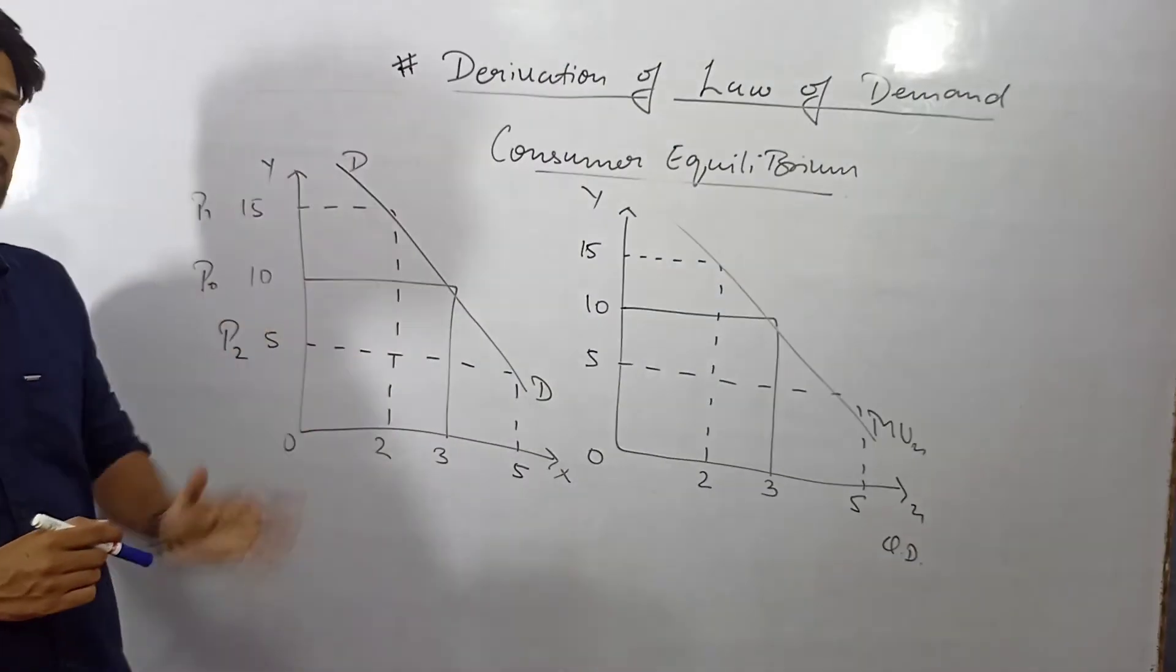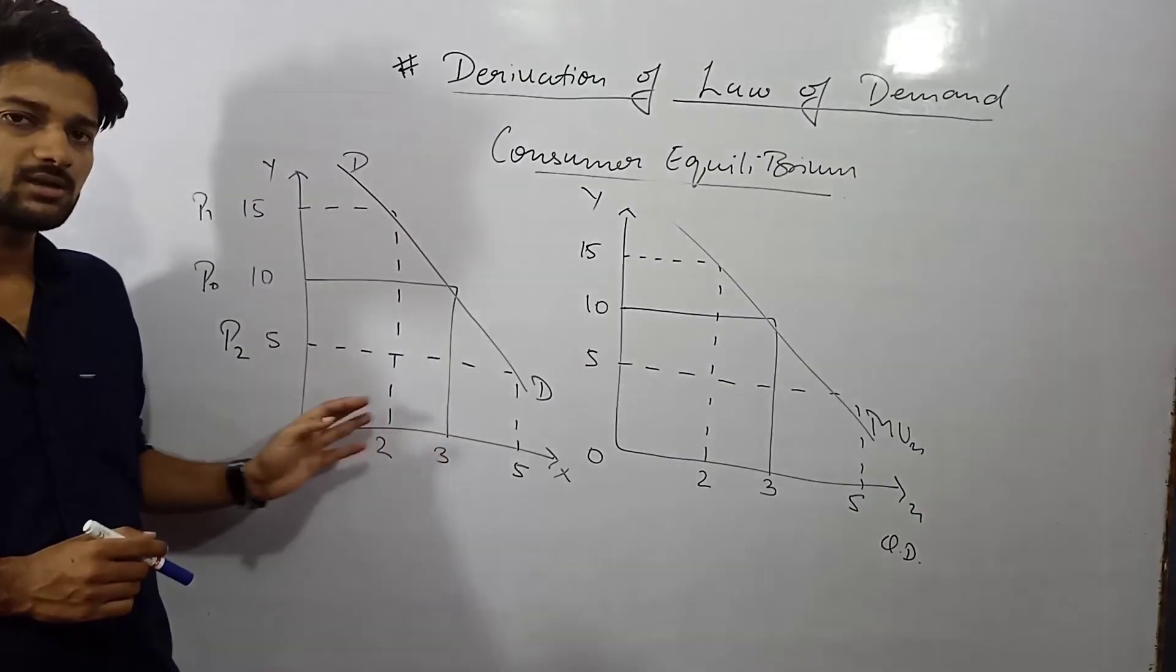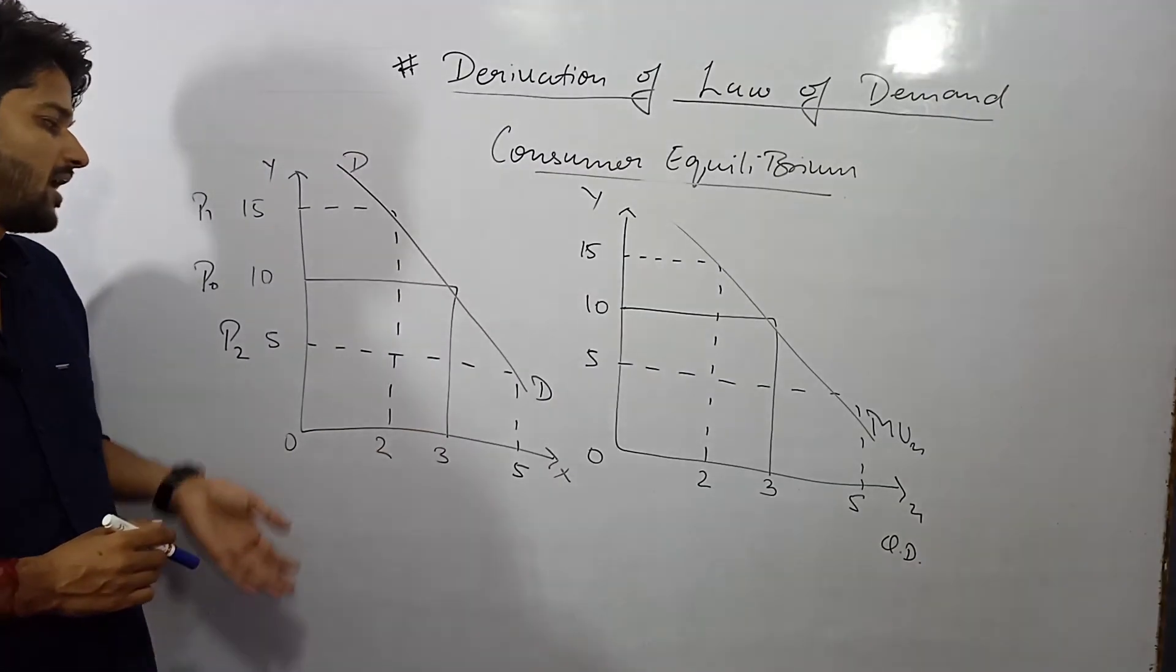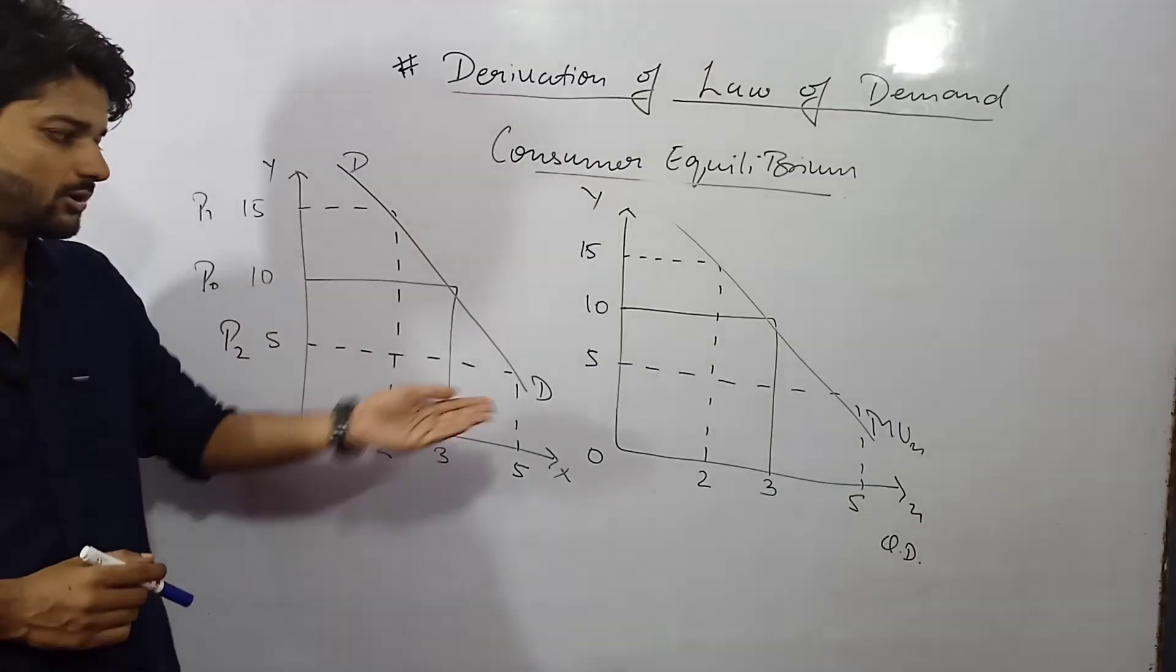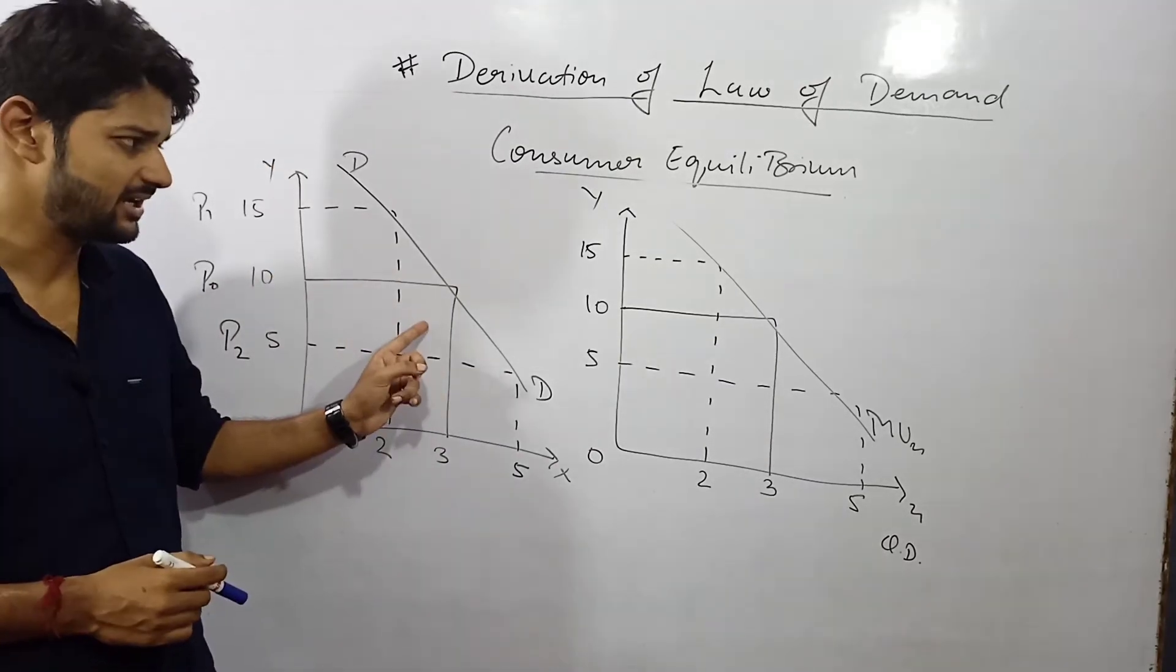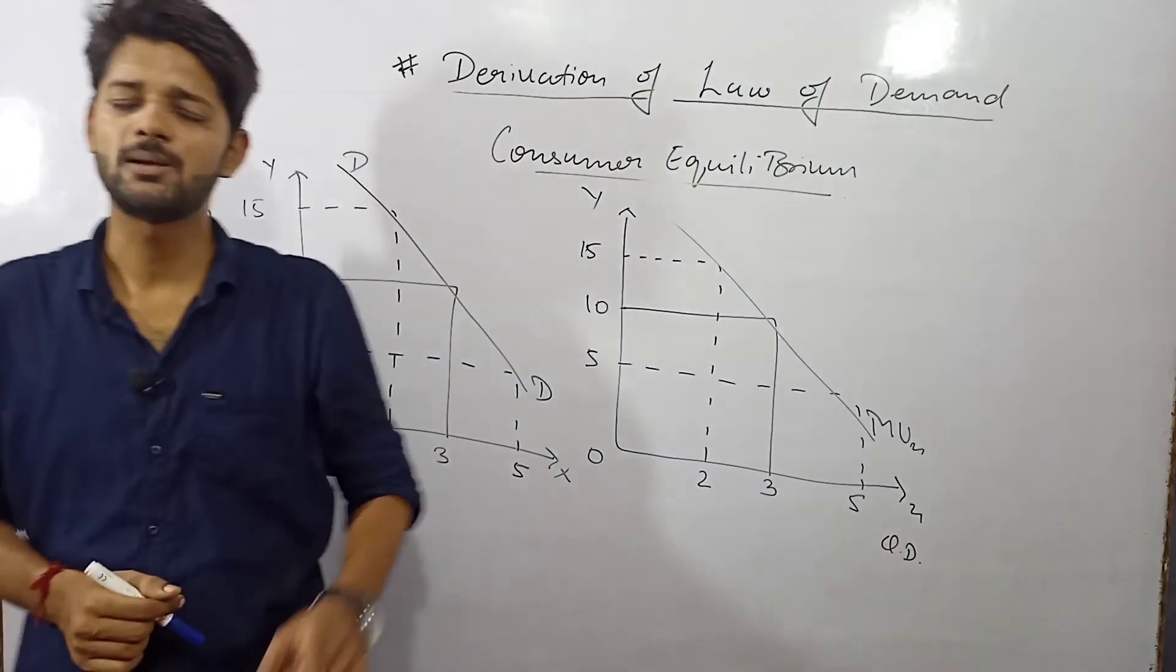So this can also be proved with the law of demand because there exists an inverse relationship between the price and the quantity demanded. Just as price increases, consumer is having less unit of consumption of X, and when the price decreases he is having more unit of consumption so there exists a downward sloping demand curve.